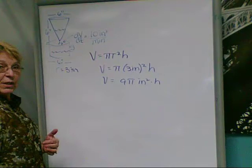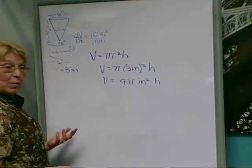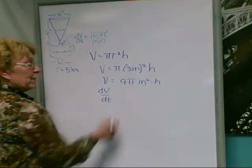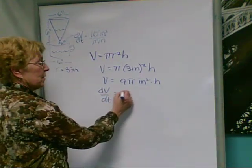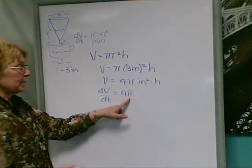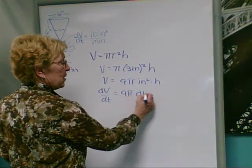And if we differentiate with respect to time on both sides, we'll have change in volume with respect to time is equal to 9 pi, constant multiplier which is getting copied, dh dt.